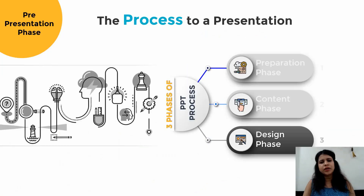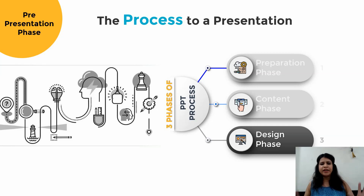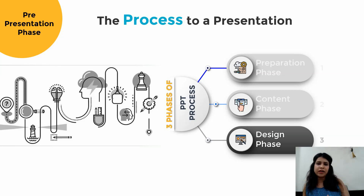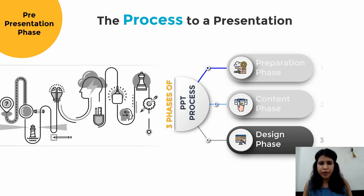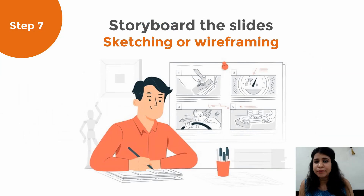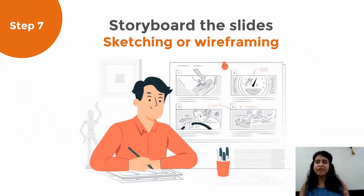Now moving on to the third phase, which is design phase. So far I haven't even opened PowerPoint — I'm only working on the data, only working on the preparation and the content. Now is when I actually get into the design phase, and even till now I do not need PowerPoint. What is step seven? This is an extremely important step in the complete process, which is storyboarding or wireframing the slide.